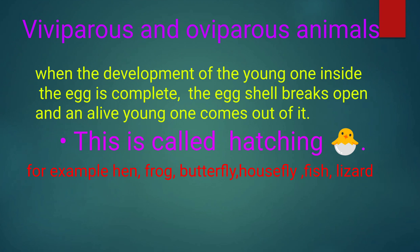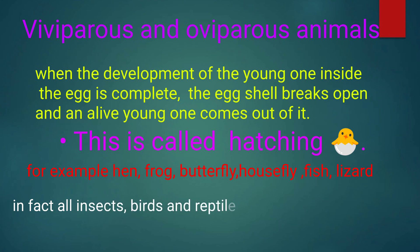Examples of oviparous animals include hen, frog, butterfly, housefly, fish, and lizard. These all are oviparous animals. In fact, all insects, birds, and reptiles are oviparous animals.